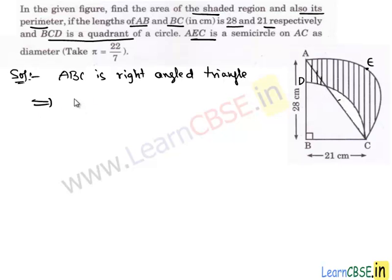To get that we know that square of hypotenuse is equal to sum of the square of other two sides. We have to find out AC. So AC square is equal to AB is 28 cm and BC is 21 cm.